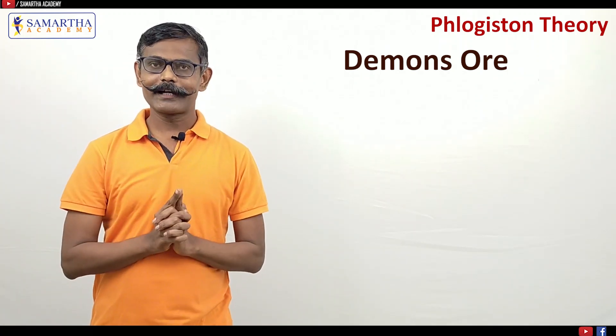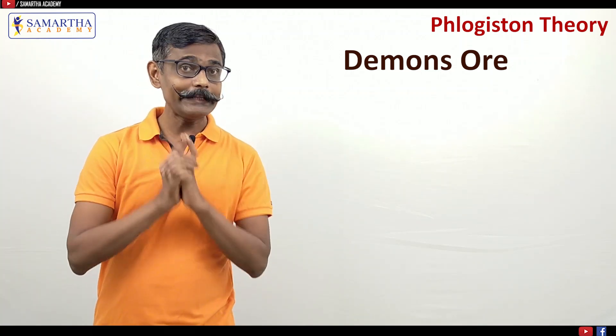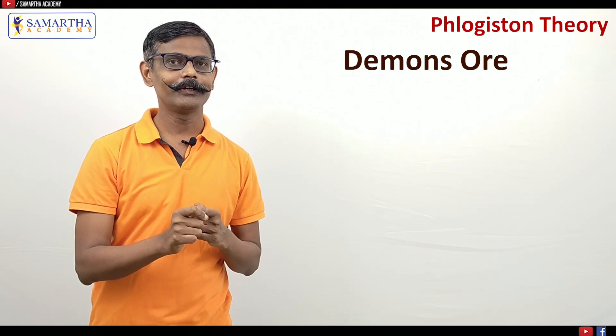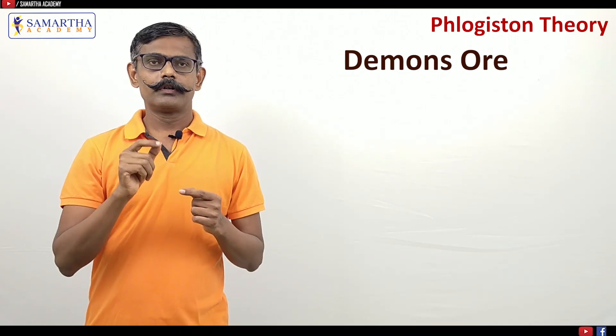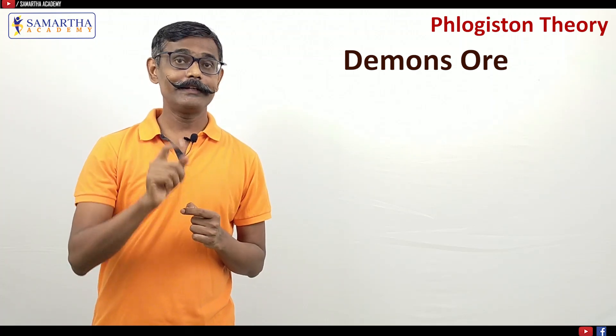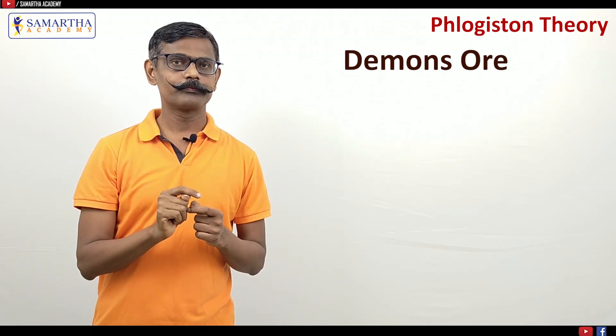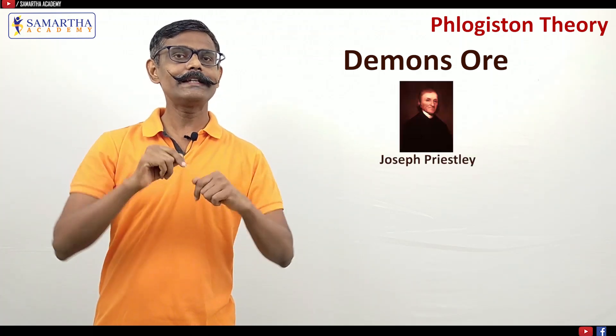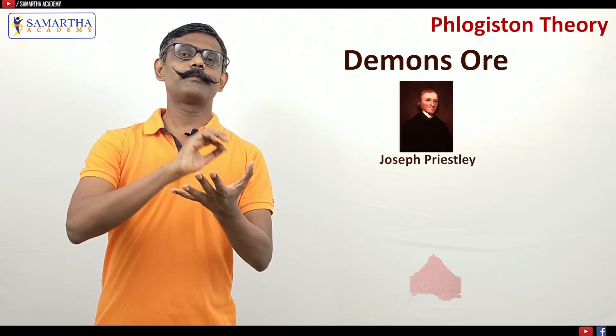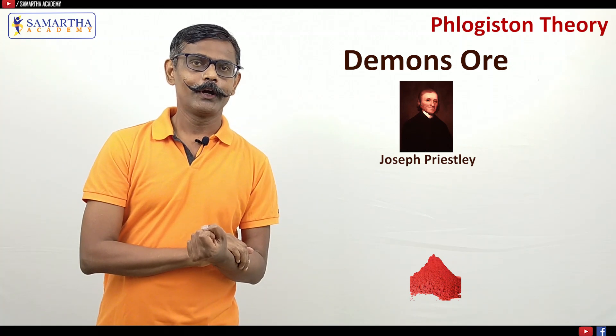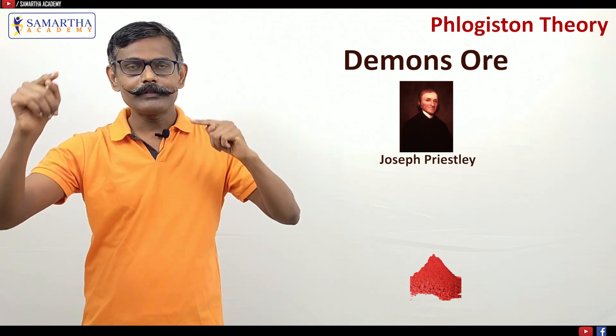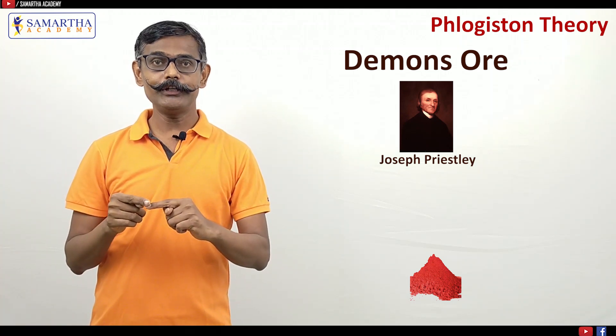Fourth interesting example that took place in 18th century is related to Phlogiston theory which was supported by Georg Stahl in 1702. What Priestley did? Priestley, he took red oxide of mercury, and for heating purpose he used a large lens of 12 inch.